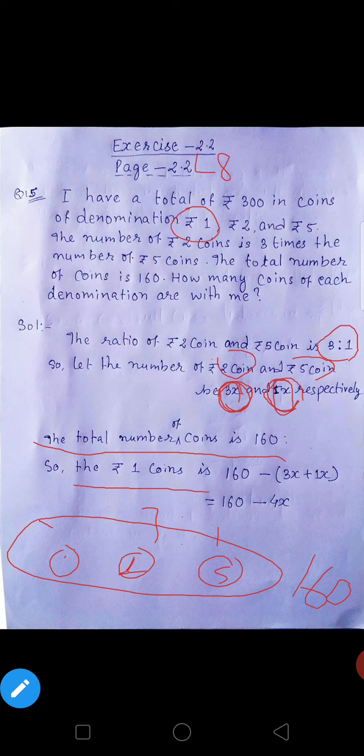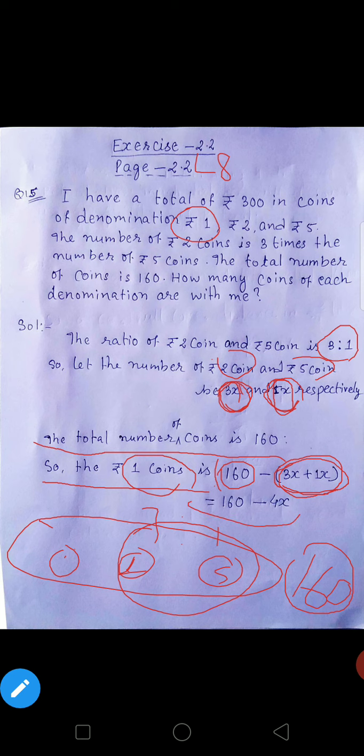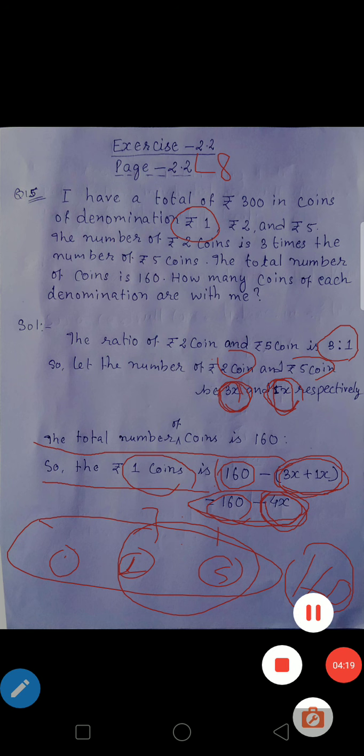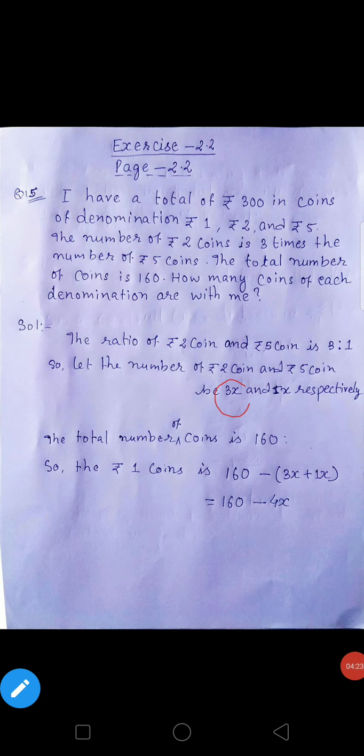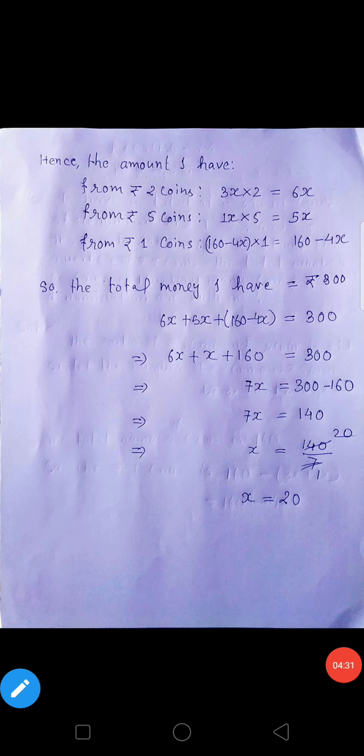The total number of coins is 160, so the rupees one coin is 160 se yeh dono ka minus kar do, 3x plus 1x. Total sikka kitna hai 160 hai, yeh 2 rupya wala coins aur 5 wale coins ko minus kar do to kya hojayega, bacha wala 1 rupya ka coins aajayega. So the rupees one coin is 160 minus 4x. Yeh 4x kya hai? 5 aur 2 rupya ka coins hai.